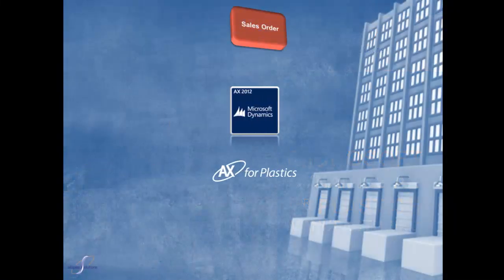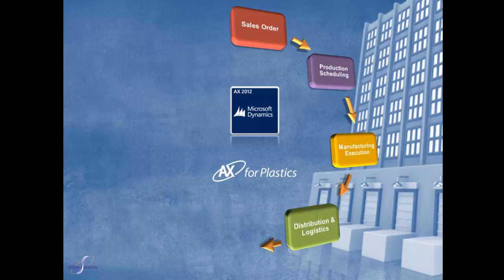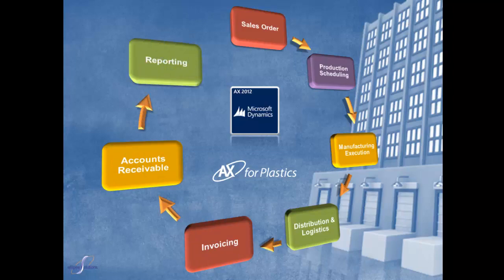In this example, the order-to-cash cycle starts by taking the customer's order from different sales channels such as email, internet, fax, or EDI, followed by managing the production, shipping and logistics, invoicing, accounts receivable processes, and reporting.